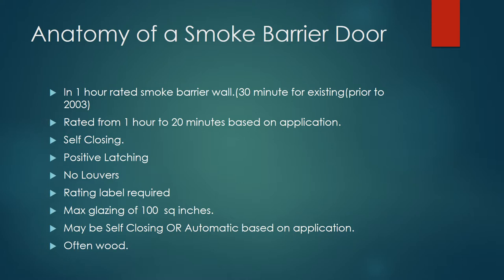Now let's talk about the anatomy of a smoke barrier door. Smoke barrier doors are typically in a 1-hour rated smoke barrier wall, or 30-minute for existing construction prior to 2003. They are rated from 1-hour to 20 minutes based on application, and require self-closing with positive latching. An important distinction from fire doors: no louvers are allowed in a smoke barrier door. In a purely fire door, louvers can be used if they're fusible-linked or contain intumescent material that will close during a fire.